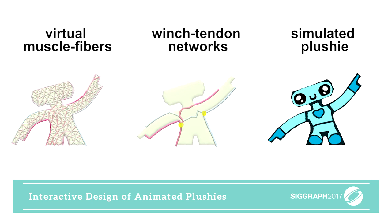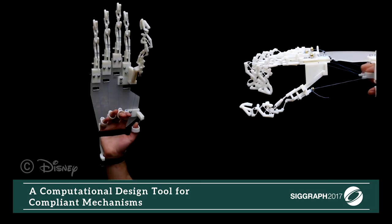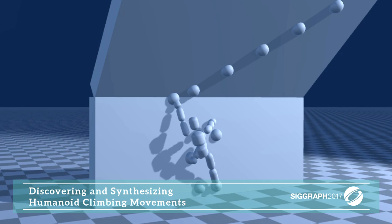Actuated plushy toys with internal tendons can be designed to achieve particular motions using this new framework. Compliant mechanisms like this mechanical hand permit motion through elastically deforming flexures rather than rigid articulation.